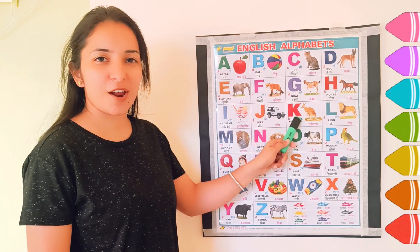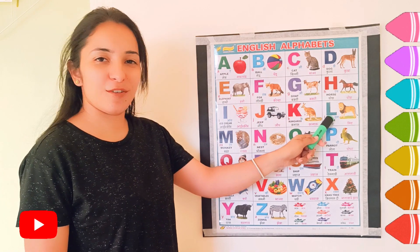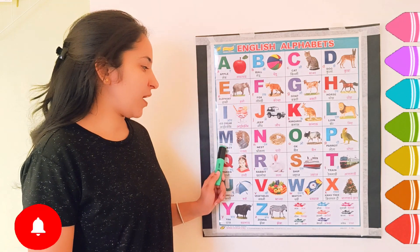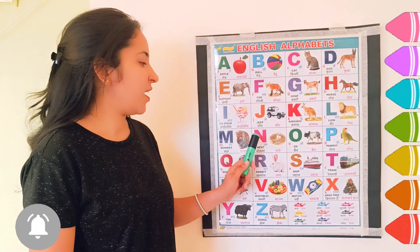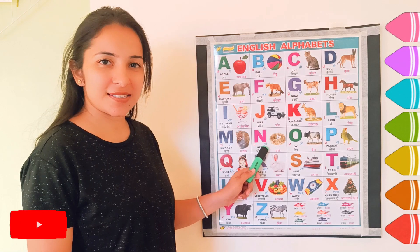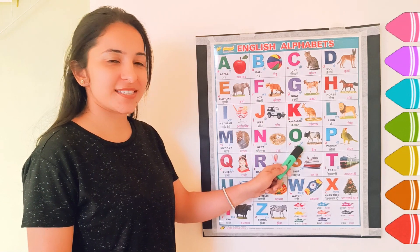K, K for kangaroo. L, L for lion. M, M for monkey. N, N for nest. O, O for ox.